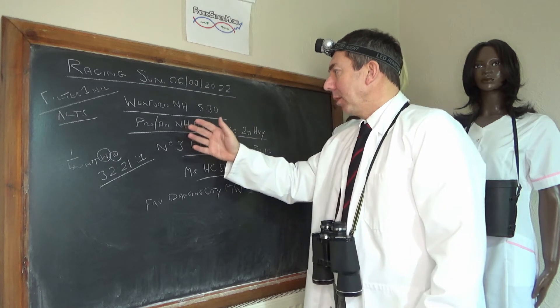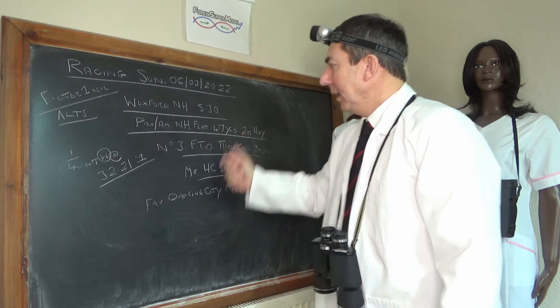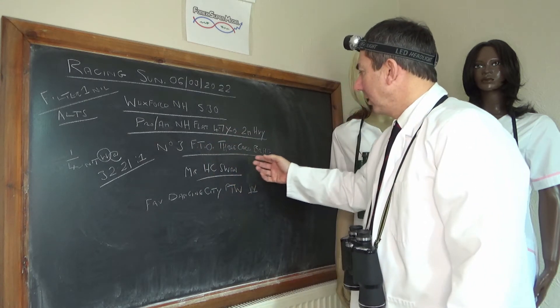So the last race, it's a Pro-Am National Hunt flat bumper, 4 to 7 year olds, 2 mile heavy. We're looking at number 3, which is an FTO, first time out, 3 Card Brag.